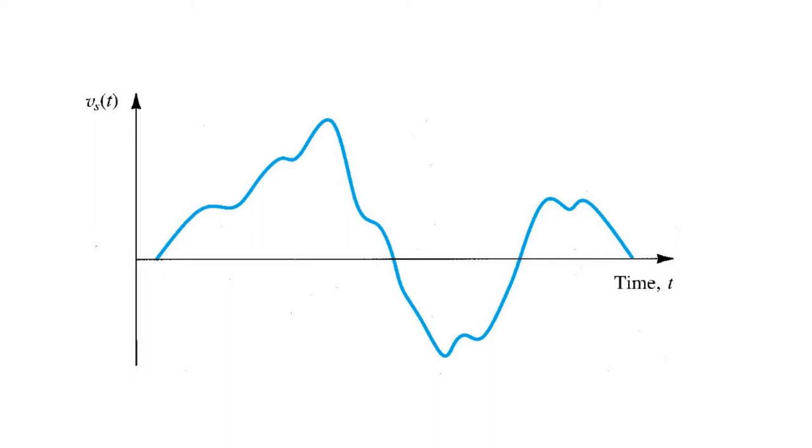For example, we might have a voltage that depends on the temperature outside, or we might have a current that carries an audio signal, or perhaps an electromagnetic signal like a radio signal. In general, these signals will be time varying, like the voltage waveform shown here.